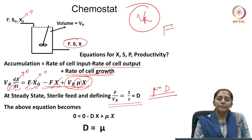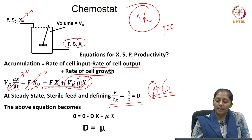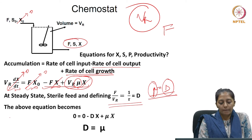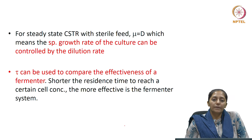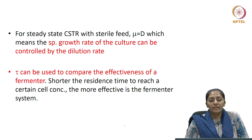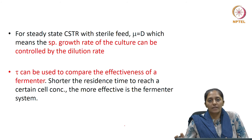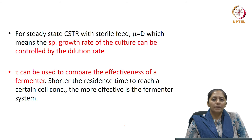The advantage of running a continuous reactor is the opportunity to control the growth rate of the culture by manipulating the flow rate, because D is a function of flow rate. At steady state the specific growth rate equals the dilution rate. The dilution rates can therefore be used to compare the effectiveness of fermenters: for maximum productivity, the shorter the residence time needed to reach the desired cell mass concentration, the more effective the fermenter.